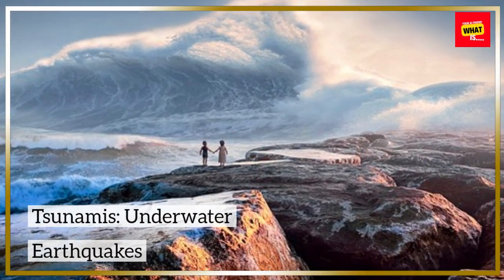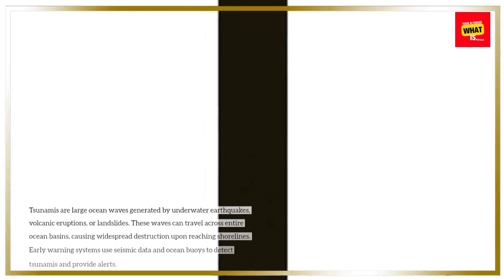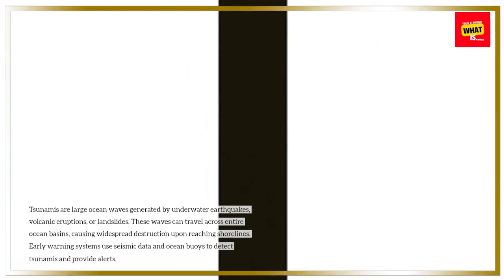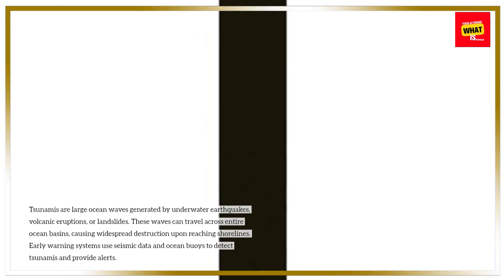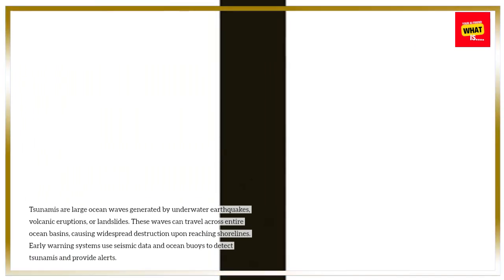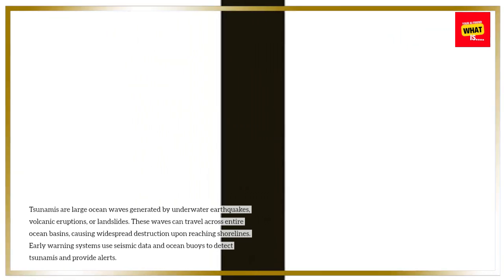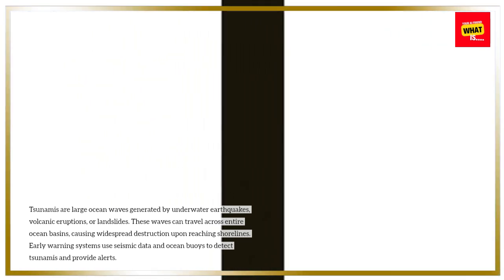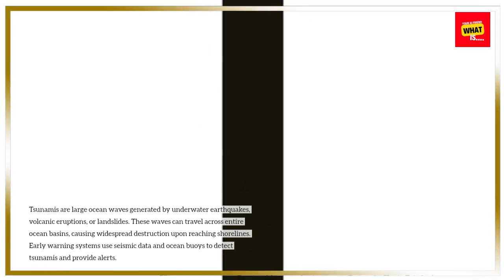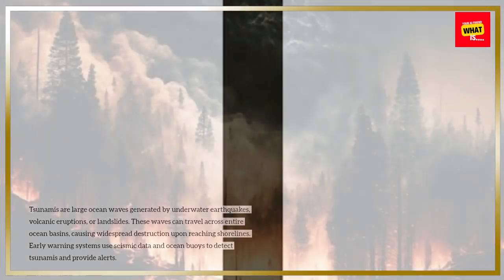Tsunamis: Underwater Earthquakes. Tsunamis are large ocean waves generated by underwater earthquakes, volcanic eruptions, or landslides. These waves can travel across entire ocean basins, causing widespread destruction upon reaching shorelines. Early warning systems use seismic data and ocean buoys to detect tsunamis and provide alerts.